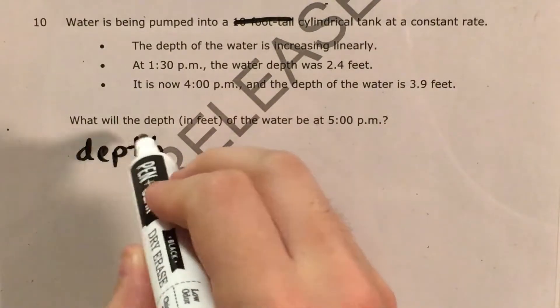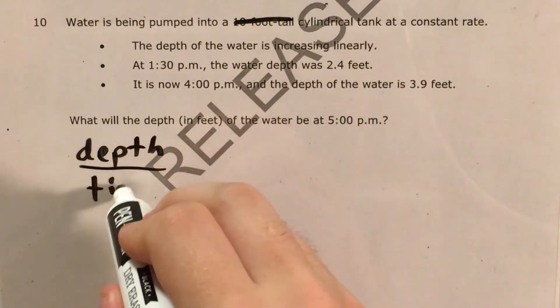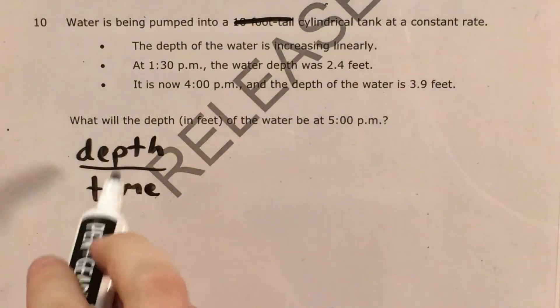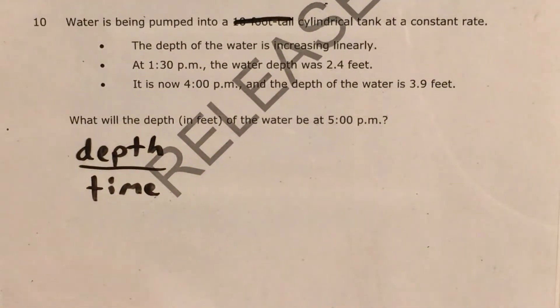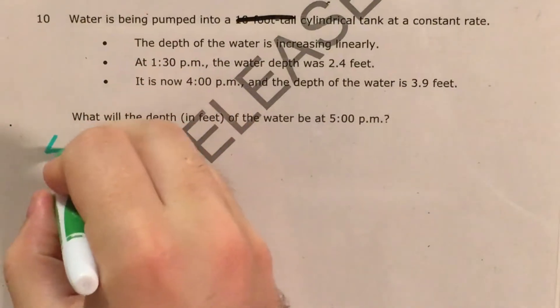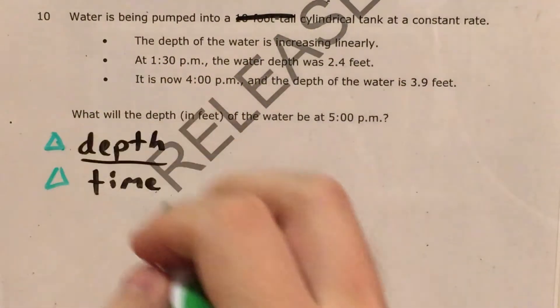So whenever we have time in a problem, it is a safe bet to make time your denominator in a slope or rate of change fraction. Unless you have some indication that that's definitely not what you do, we'll assume that the depth is changing over time. Literally over time. So let's go ahead and figure out the change in depth and the change in time.